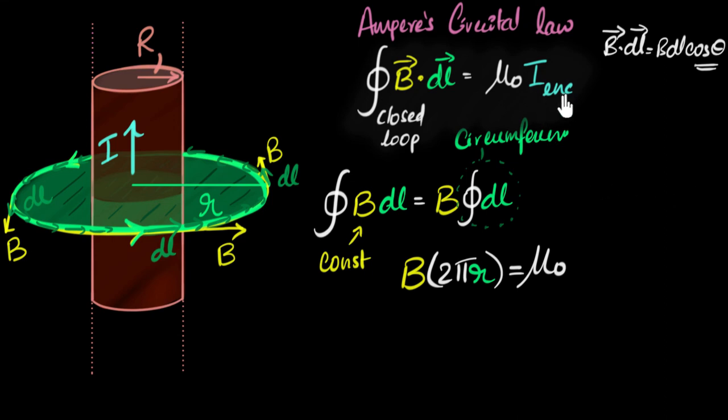There you go. And i enclosed is the current punching through that film. And you can now see that the entire current I is punching through that film. And so the entire current I would be our i enclosed.